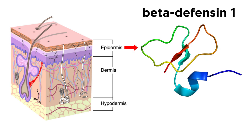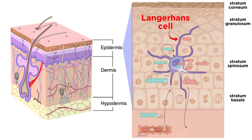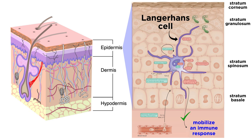Beneath the stratum corneum, keratinocytes make a type of defensin called beta-defensins, which are stored in lipid-rich organelles called lamellar bodies and are released into the extracellular space. Another important contributor to skin barrier defense is a unique population of skin-resident dendritic cells called Langerhans cells. Langerhans cells extend their dendrites into the stratum corneum to sample antigen. During homeostasis, Langerhans cells promote regulatory T-cell development in the skin. However, if they sense an infection, they can quickly help mobilize both an innate and an adaptive immune response. In addition, Langerhans cells are tolerant to the normal skin microbiome, meaning that they do not launch an immune attack in response to these microbes.